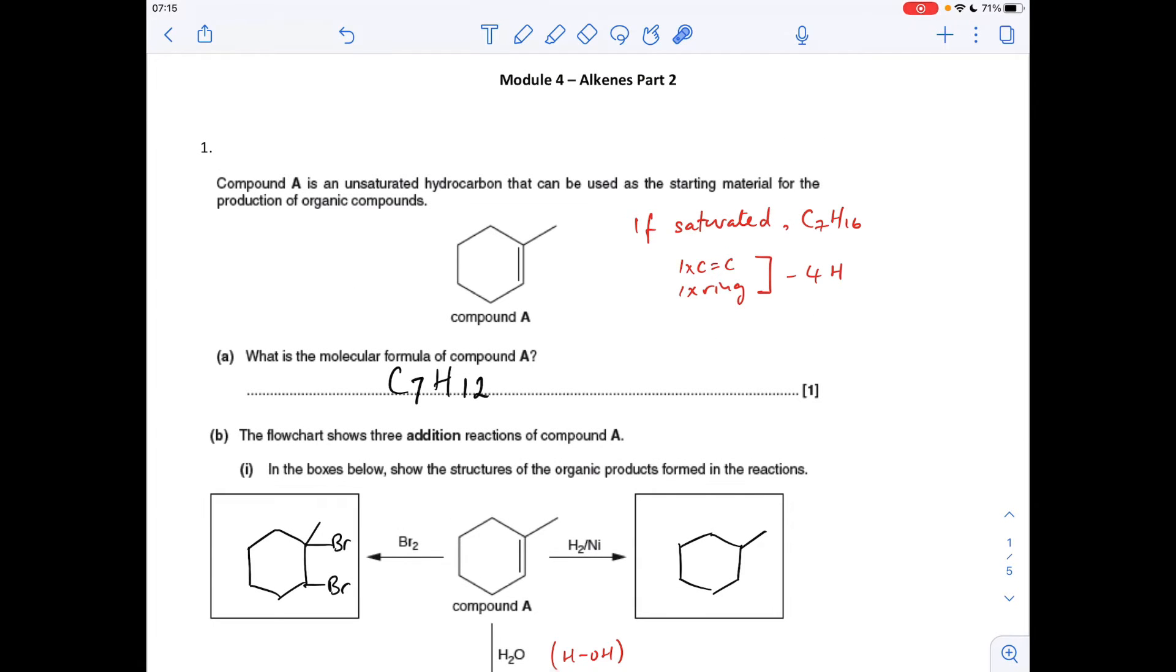OK, so question one, what's the molecular formula of compound A? So the way I work it out is I'd say if it was saturated, it would have seven carbons and 16 hydrogens, CNH2N plus two. We've got one double bond and we've got one ring. So we take two hydrogens off for the double bond, two for the ring, so four in total, takes us down to C7H12. Or you can count the hydrogens on each carbon.